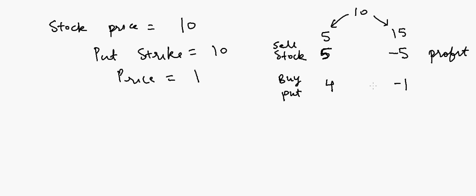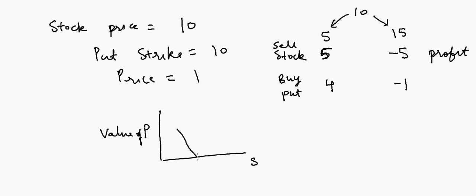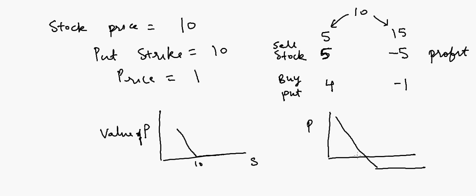If we plot a graph for the put option, the value of the put is on the y-axis and stock price is on the x-axis. The value of the put increases as the stock price falls below $10. Looking at the profit chart, when stock price is above $10 the loss is $1 (the cost of the put), and the profit line crosses zero at $9 — so we start making money when the stock falls below $9.